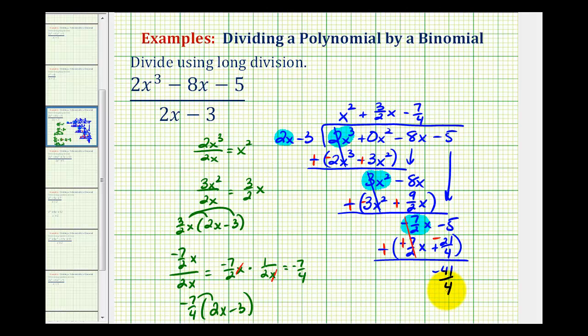Notice how the remainder is negative. So we're going to have minus 41 over 4. And then remember the divisor goes in the denominator, so we'll have times the quantity 2x minus 3. So here's our quotient.